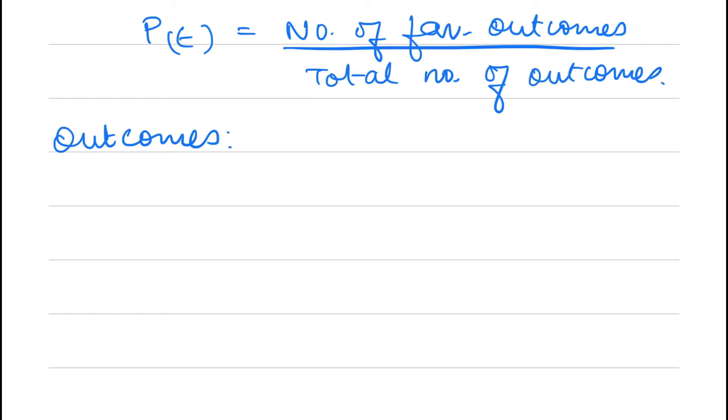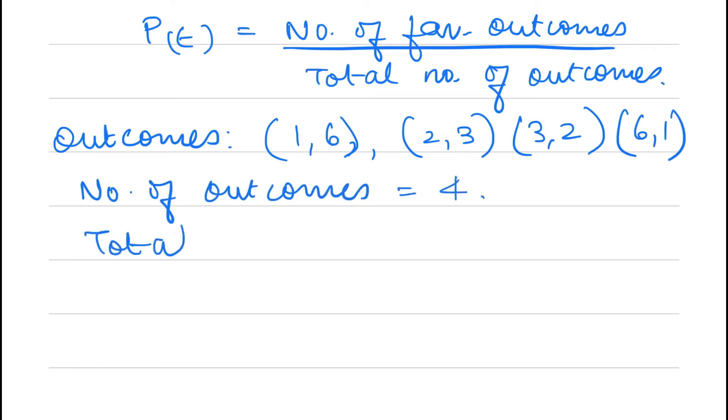The favorable outcomes are (1,6), (2,3), (3,2), and (6,1). So there are 4 favorable outcomes. Total outcomes for two dice are 36. Therefore probability = 4/36 = 1/9. This is the answer.